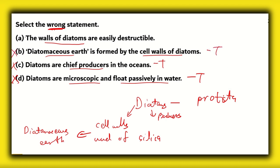So, that makes it incorrect. The only wrong statement in this set of statements is option A. The walls of diatoms are easily destructible. Actually, since the walls of diatoms are made of silica, they are actually hard to destroy. And that's why we still find diatomaceous earth made up of the cell walls of diatoms. So, therefore, option A is a false statement and that's why that statement is the correct answer.